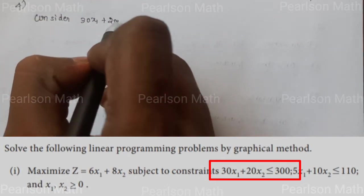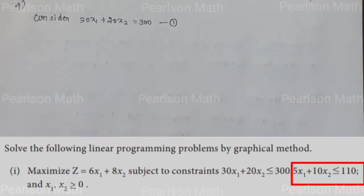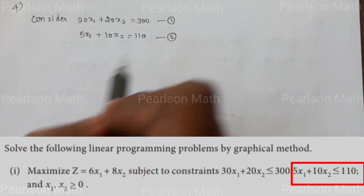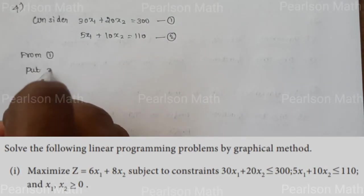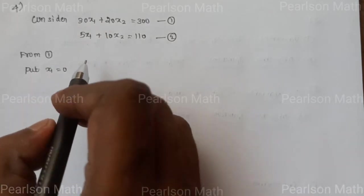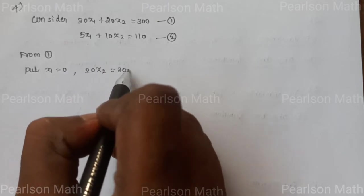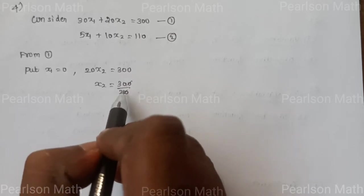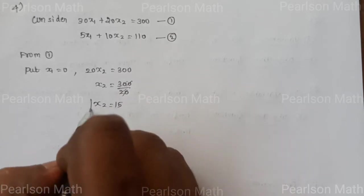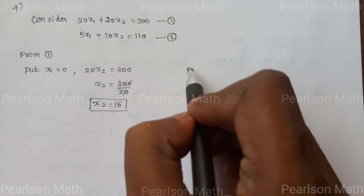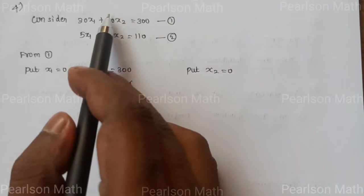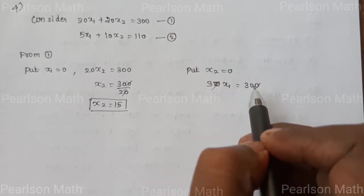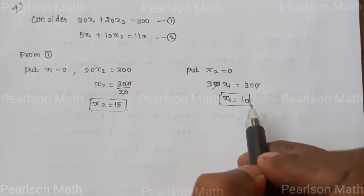Consider the first equation: 30x₁ plus 20x₂ equals 300. This is the first equation, and the second equation is 5x₁ plus 10x₂ equals 110. In the first equation, put x₁ equals 0, so 20x₂ equals 300, therefore x₂ equals 15.